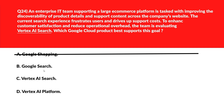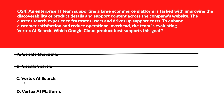We'll move to Option C. Option C says using Vertex AI Search as a solution for enterprise semantic search across internal documents and product catalogs. This can help because, as the question states, the current search experience frustrates users and drives up support costs. Let's keep Option C.